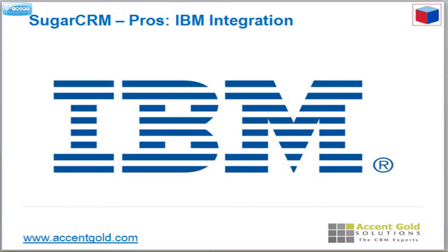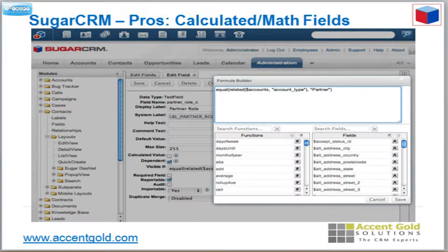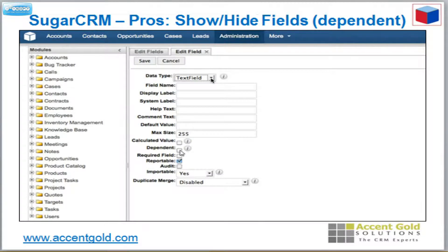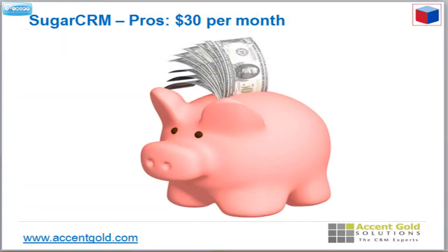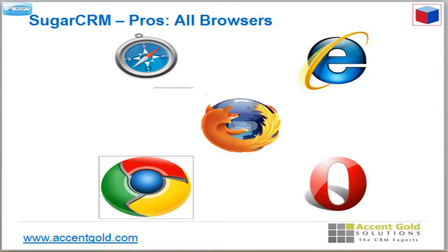IBM integration — if you're an IBM shop, you're going to love that. Calculated fields: you can add field A plus field B equals field C, or roll up fields to the higher entity to the parent record — not a problem. Show and hide fields based on a value in another field — no problem. At $30 a month per user, it's probably the best bang for your buck on the marketplace.